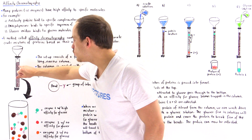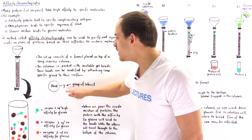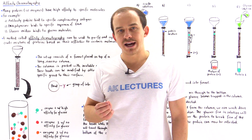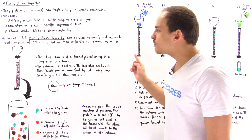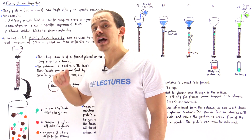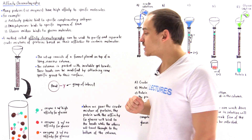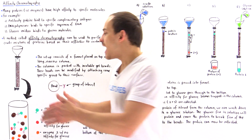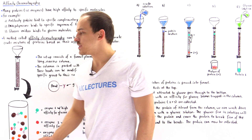For example, if we zoom in on one of these gel beads, we can see that we attach a specific type of group — we'll call it group Y. The type of group we attach corresponds to the substrate molecule that the protein we want to isolate actually binds to. Let's zoom in to the molecular level of a small section of this column to see exactly what we mean.